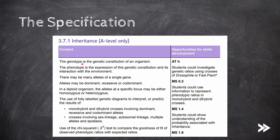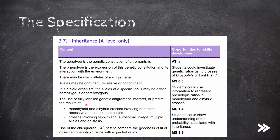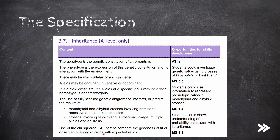We will start by defining the terms genotype and phenotype, and then move on to alleles, and how they may be dominant, recessive or codominant. We should also know that in a diploid organism, the alleles at a specific locus may either be homozygous or heterozygous. We should then be able to use fully labelled genetic diagrams to interpret or predict the result of monohybrid and dihybrid crosses involving dominant, recessive and codominant alleles, as well as crosses involving sex linkage, autosomal linkage, multiple alleles and epistasis. Finally, we should be able to use the chi-squared test to compare the goodness of fit of observed phenotypic ratios with expected ratios.